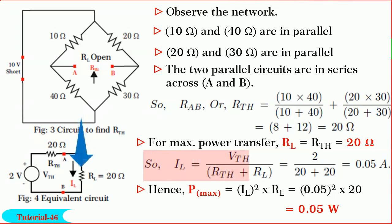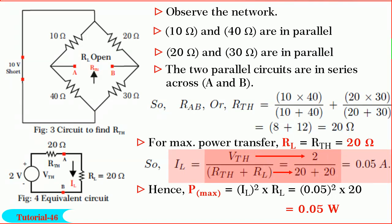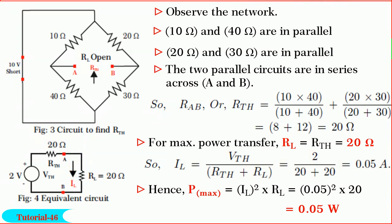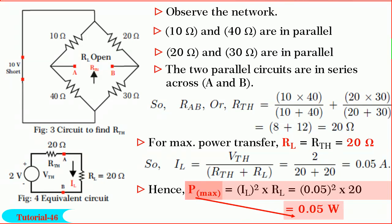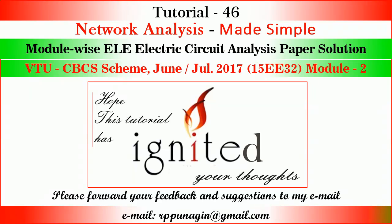So, IL equals V-Thevenin divided by (R-Thevenin plus RL). By substituting the values, we get IL equal to 0.05 amperes. Therefore, P-max equals IL squared into RL. By substituting the values and solving, we get P-max equal to 0.05 watts. Friends, after going through this tutorial, I hope you have learned to explain theorems and solve numerical examples. If this tutorial has ignited some of your thoughts, please forward your feedback and suggestions to my email. Thank you for watching this video.